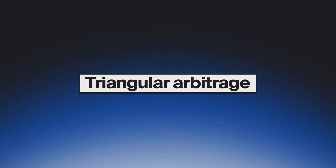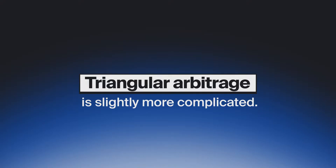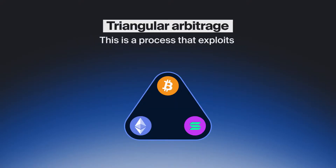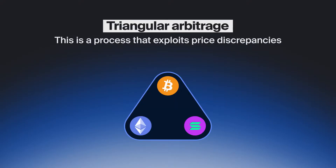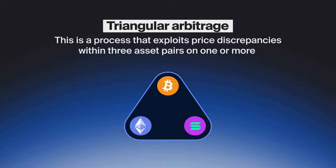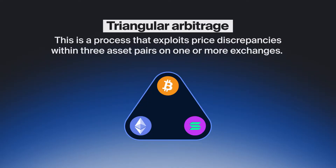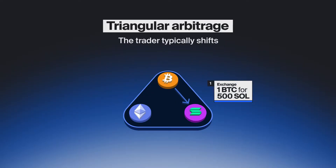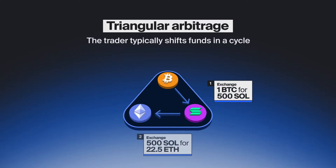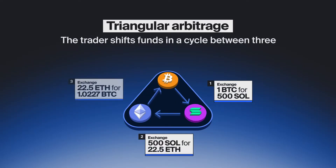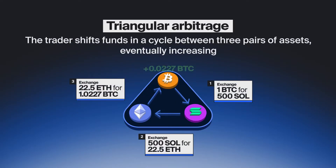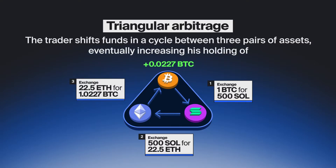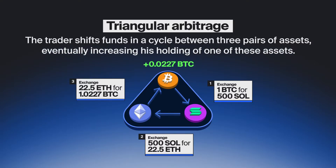Triangular arbitrage is slightly more complicated. This is a process that exploits price discrepancies within three asset pairs on one or more exchanges. The trader typically shifts funds in a cycle between three pairs of assets, eventually increasing his holding of one of these assets.